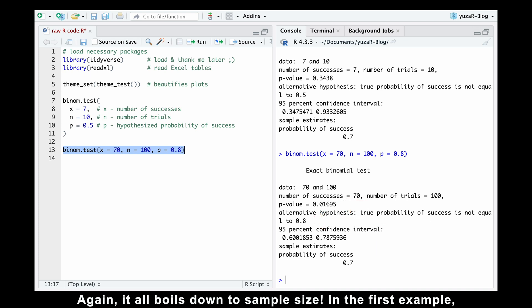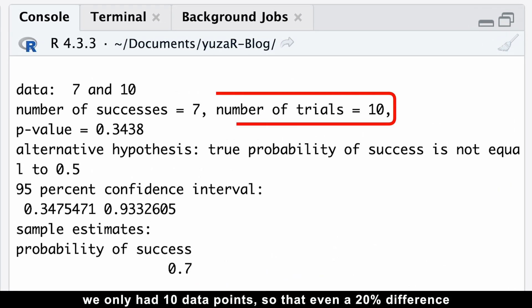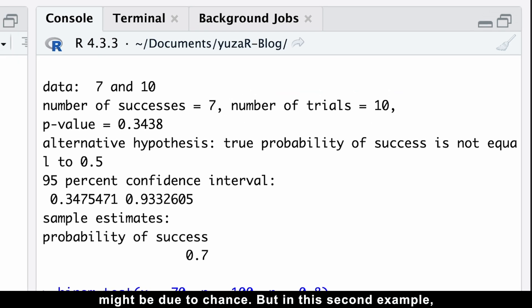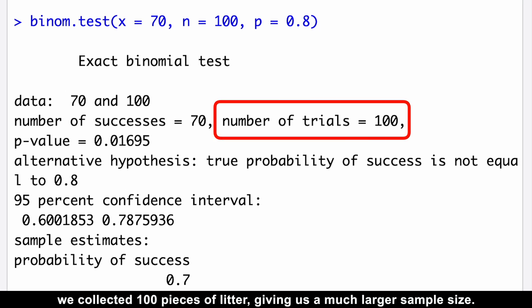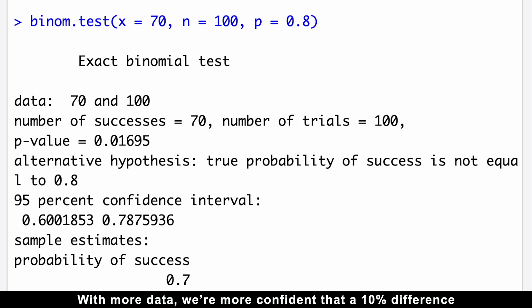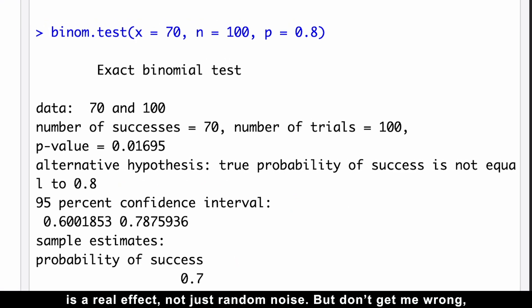Again, it all boils down to sample size. In the first example, we only had 10 data points so that even a 20% difference might be due to chance. But in this second example, we collected 100 pieces of data, giving us a much larger sample size. With more data, we are more confident that a 10% difference is a real effect, not just random noise.